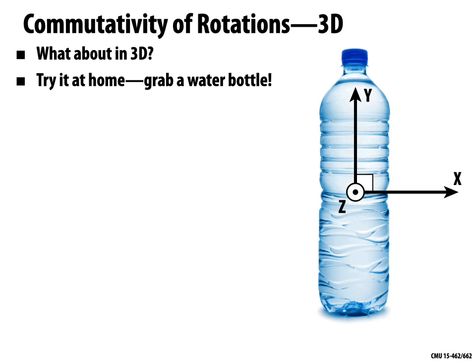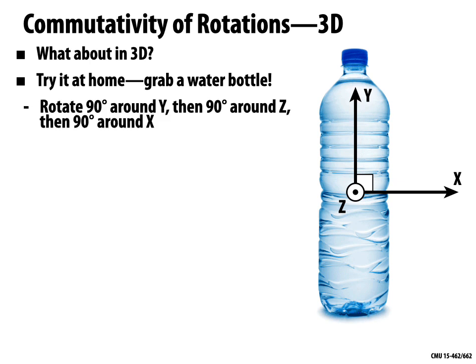Put the water bottle down on your desk. The vertical direction pointing up toward the ceiling is the Y direction; Z is the direction pointing straight toward you; X is the direction pointing to your right. Open the water bottle and drink most of it so we're not spilling water everywhere. Then perform the following sequence of rotations: first rotate it 90 degrees around the Y direction. Then 90 degrees around the Z direction — it should be pointing along the X axis. And finally 90 degrees around the X axis, just rolling it around its axis.